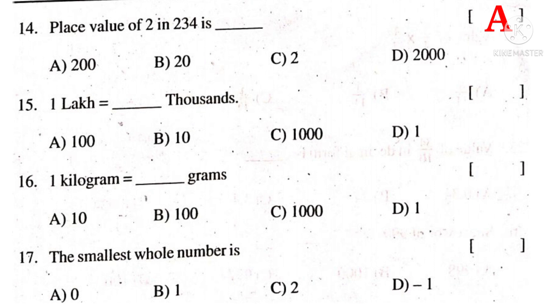1 lakh is equal to dash thousands. Write 1 lakh in digits. Thousands have three zeros, so the remaining number, 100, is the answer. The correct choice is A.